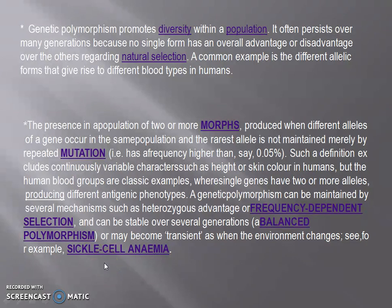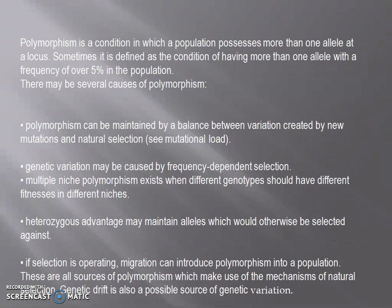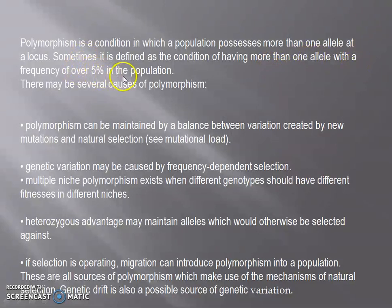Some features of genetic polymorphism to remember: all Mendelian populations have genetic polymorphism. More than two types of genotypes are involved and they are adapted to different environments. They increase the efficiency in exploitation of resources and help the species survive in a variety of environments. They are inherited and modified by natural selection due to different alleles of the same gene. Polymorphism is a condition where a population possesses more than one allele at a locus, sometimes defined as having more than one allele with a frequency of over 5% in the population.